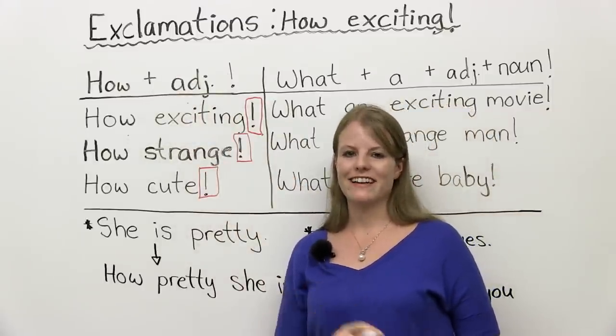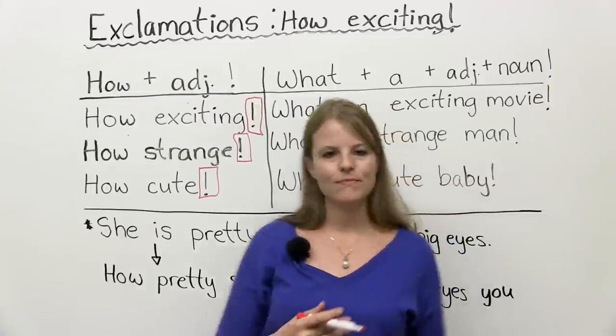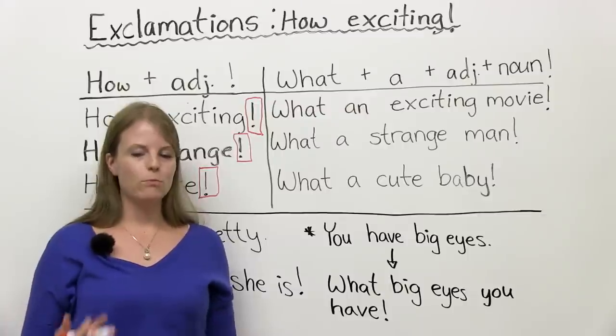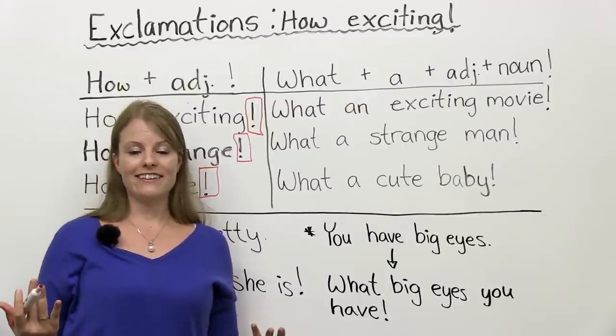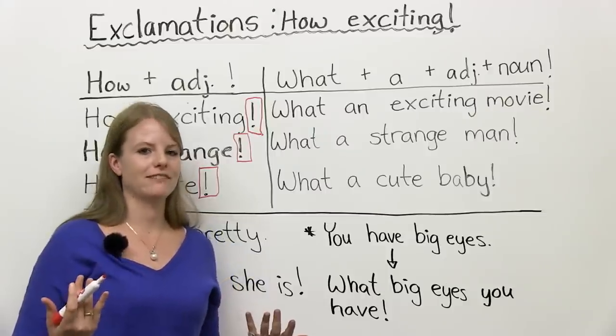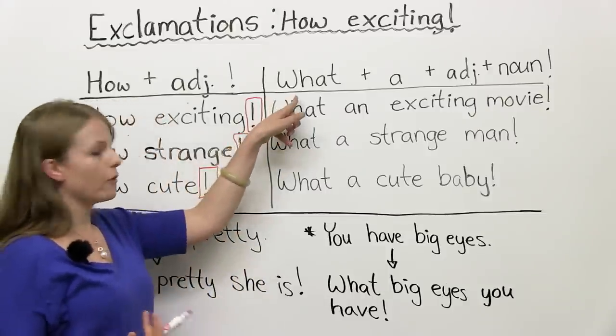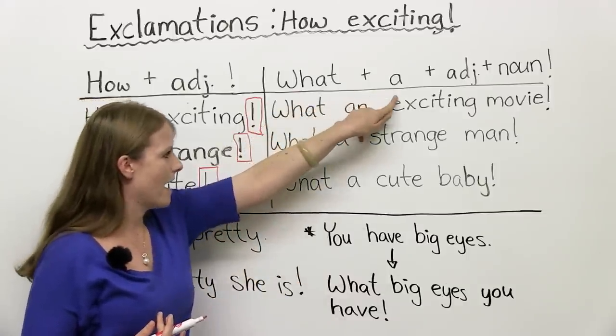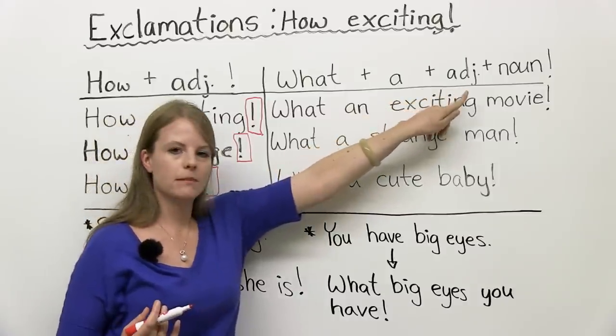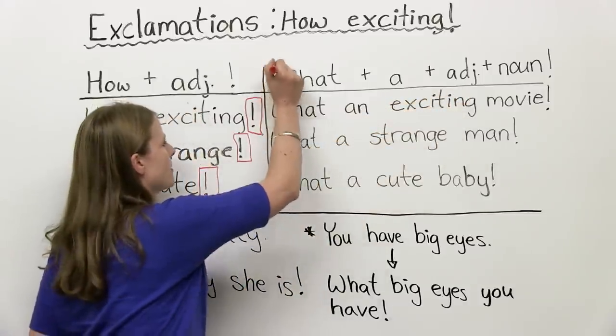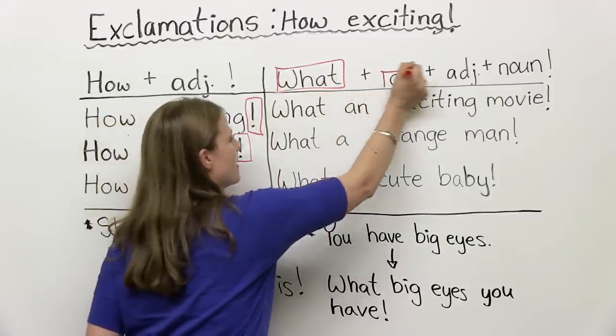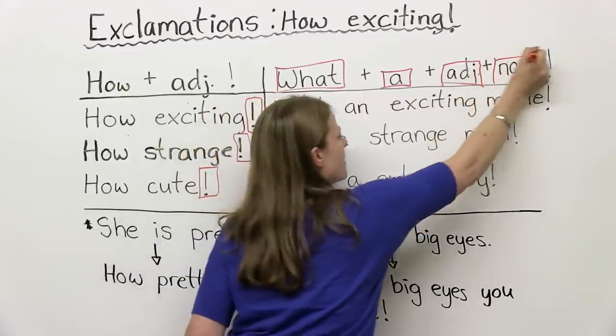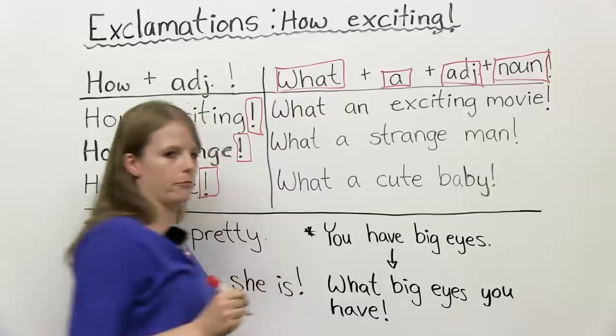Let's look at our what exclamations. It's on this side. It's the same idea. We use this when we're showing surprise. Or we really want to show we mean something. So the formula, it's like math. We take what plus a plus adjective plus noun. So let's isolate this. What a adjective. And noun. And our exclamation point.